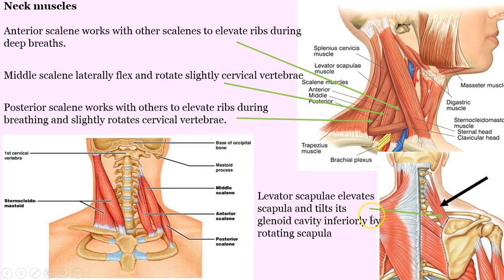Levator scapulae is up to the right. You won't see this — it's a deep muscle because you have the splenius capitis and the trapezius on the surface. This muscle is going to rotate the scapula slightly. There's a glenoid fossa here with the head of the humerus, and a little tilting going on.